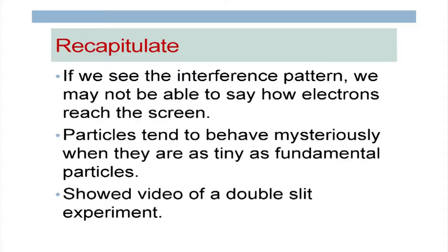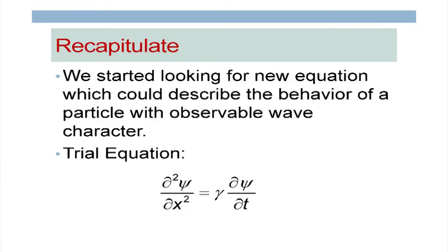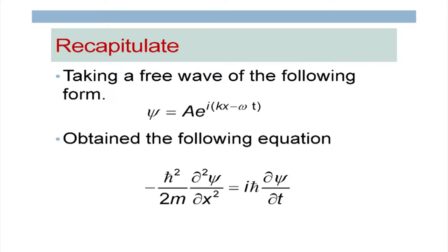We showed a video about the double slit experiment. Then we started looking for a new equation to describe the behavior, starting with a particular equation form. We gave logic for why to look at this equation — we want the constant relating the time derivative and position derivative to have no dynamical variable. We realized that a typical sine or cosine function will not be a solution.